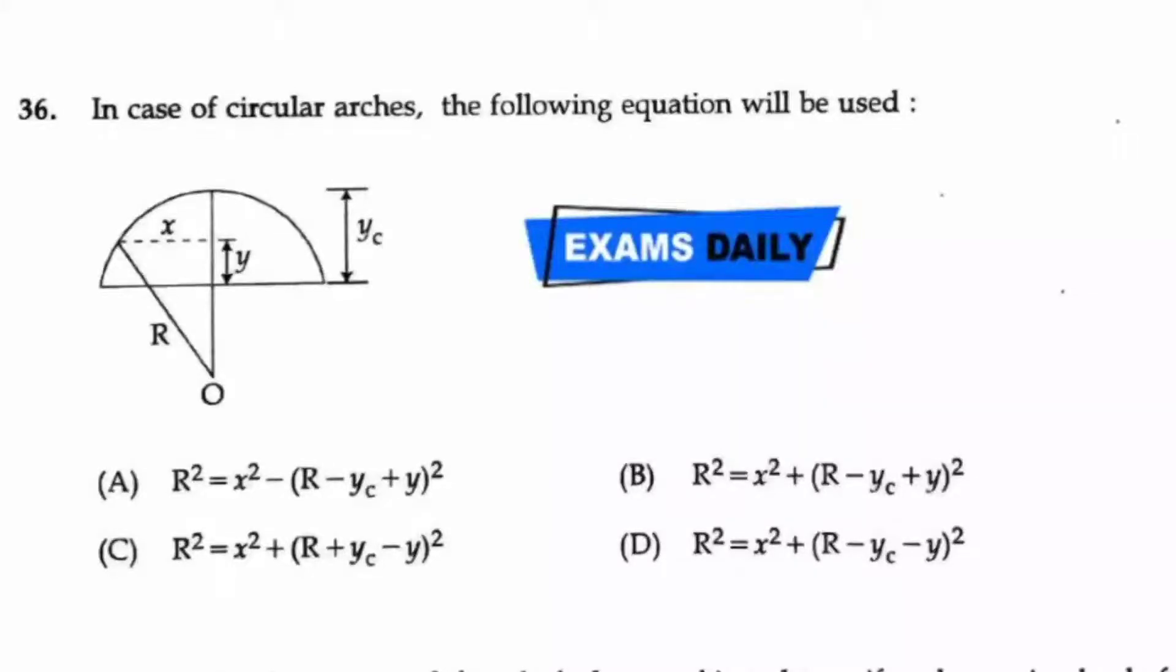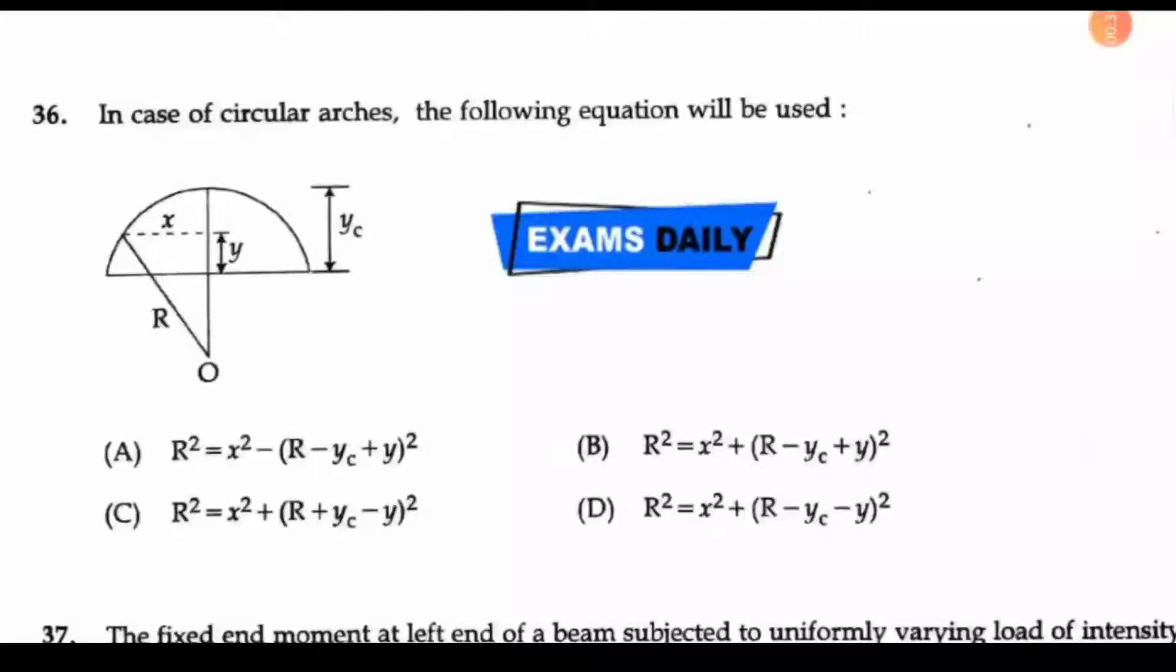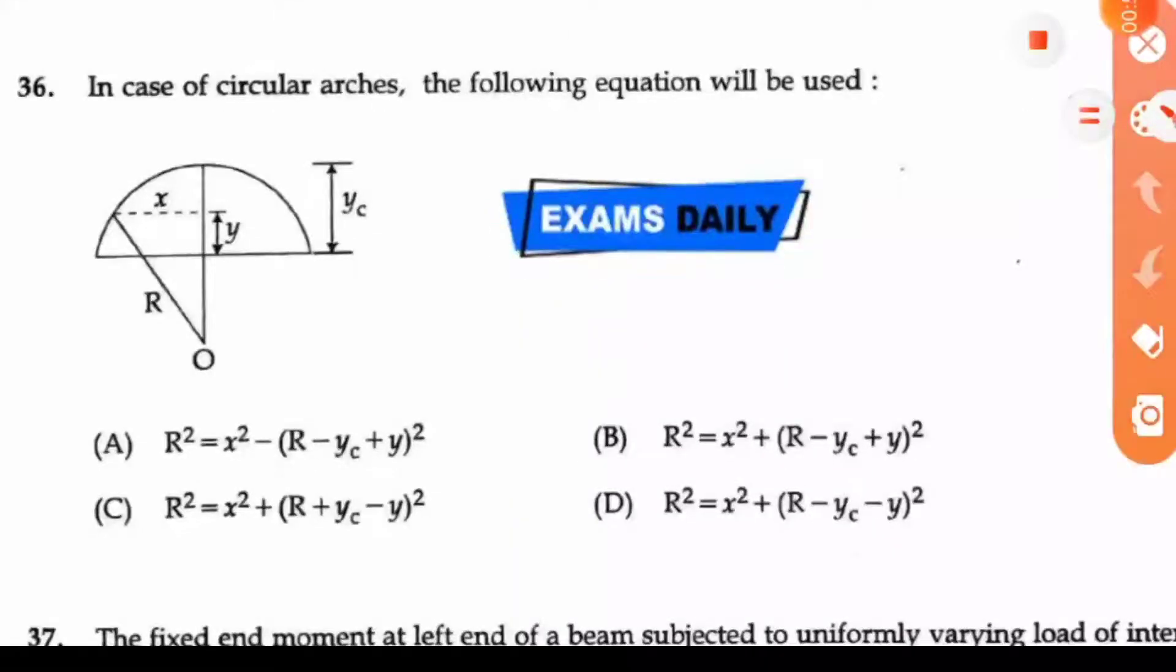By using these three sides of the triangle with Pythagoras theorem, the answer is option B: R² = x² + (R - yc + y)².